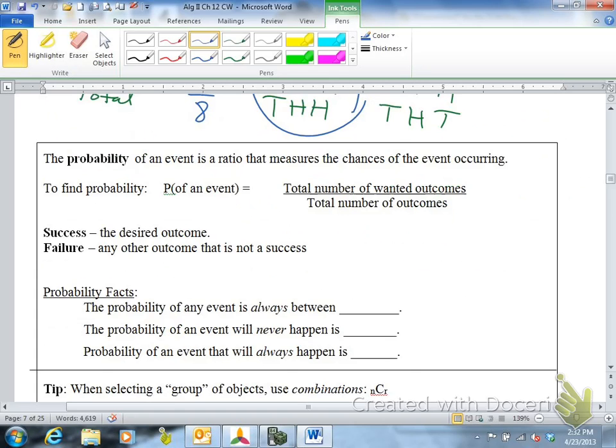The formal definition: probability of an event is a ratio. Ratio is a fraction, so you get a fraction. Ratio that measures the chances that the event occurs. So to find the probability, you'll see a capital P next to something. This P stands for probability, not permutation. And you have the total number of wanted outcomes divided by your total number of outcomes. We talk about success, success is the desired outcome, and failure is anything that's not a success.